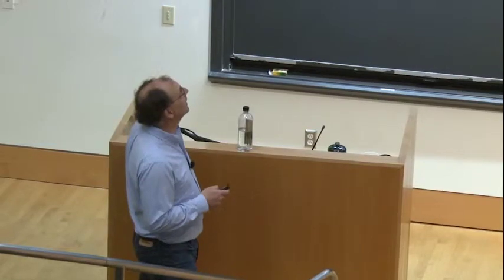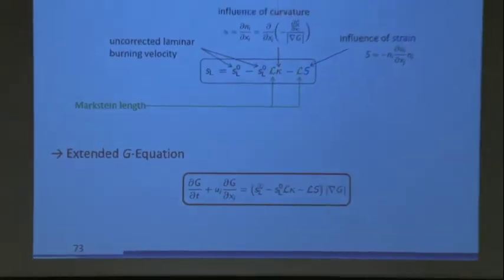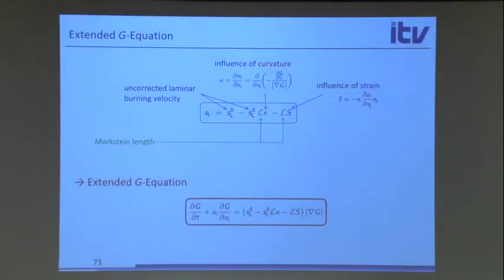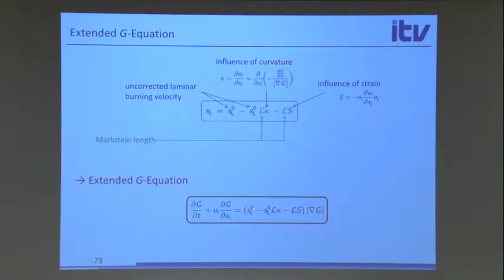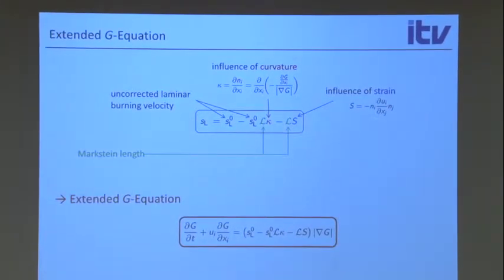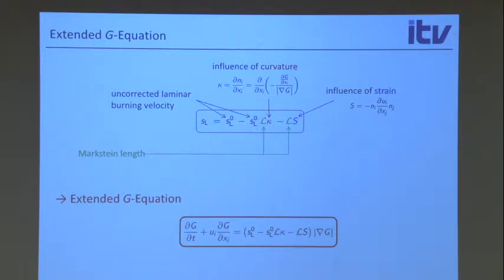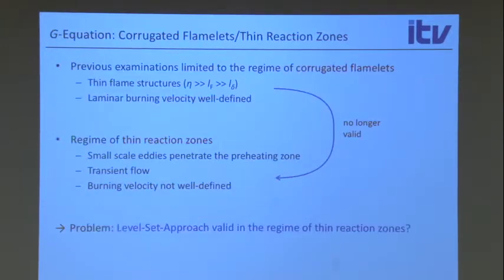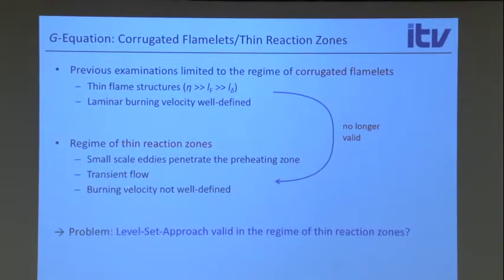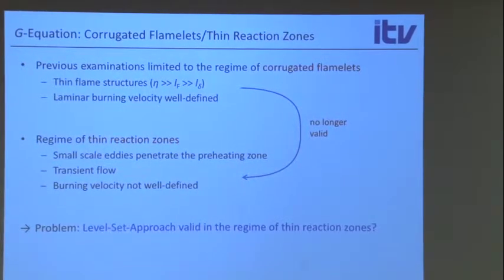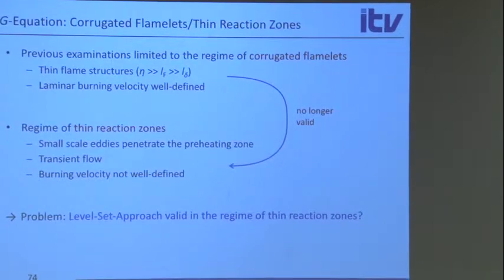What we just discussed is the level set equation that describes the flame dynamics of an infinitely thin flame, with a modification of the local burning velocity by curvature and strain. This equation doesn't require the flame to be laminar—it describes a turbulent flame, but in the DNS limit where everything is nicely resolved. In the thin reaction zones regime, however, the flame is not infinitely thin; the preheat region is much thicker due to turbulent mixing.